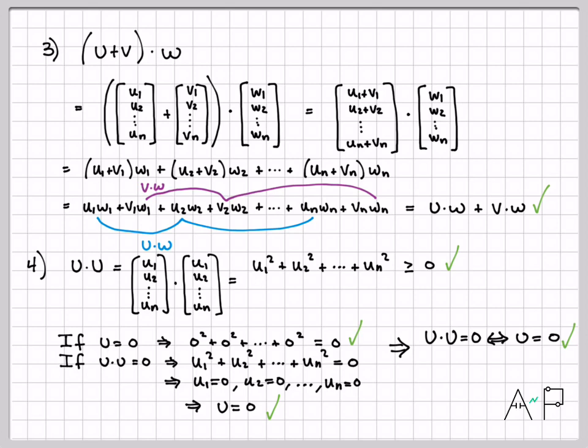So that wraps up looking at proving a variety of dot product properties. In the next video, we want to introduce the concept of what we call the norm of a vector. So the norm of that vector is a new quantity. It's basically the size of the vector, and it's based on our definition of an inner product, or in this case specifically, a dot product.